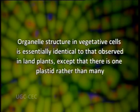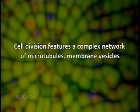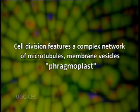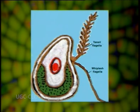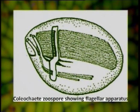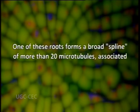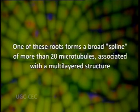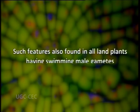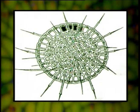Except that there is one plastid rather than many. A complex network of microtubules and membrane vesicles called phragmoplasts, found in all land plants, is also present. The zoospores and gametes bear minute polysaccharide scales on their cell surfaces. Their flagellar apex consists of two vesicle bodies projecting laterally from the cell in a V-shaped configuration, and one or two flagellar roots. One of these roots forms a broad band of more than 20 microtubules and is associated with a multi-layered structure proximally. These features are also found in all land plants that have swimming gametes.